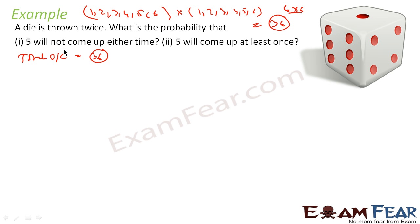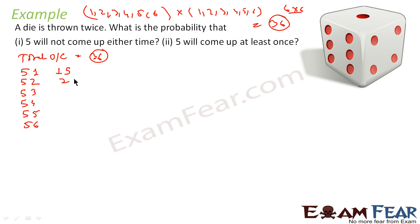Let's write all outcomes where 5 appears. When 5 comes on the first toss: (5,1), (5,2), (5,3), (5,4), (5,5), (5,6) — that's 6 outcomes. When 5 comes on the second toss: (1,5), (2,5), (3,5), (4,5), (5,5), (6,5). Since (5,5) is already counted, we cancel it. So there are 6 + 6 − 1 = 11 outcomes where 5 appears at least once.